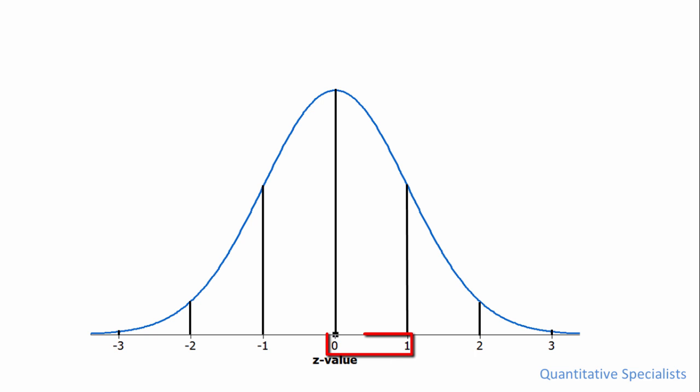So from a mean of zero to one, the proportion or area under the curve there is 0.3413. And you may recall that a normal distribution is a symmetrical distribution, so in other words, if we slice the distribution exactly in half, one side is a mirror image of the other.